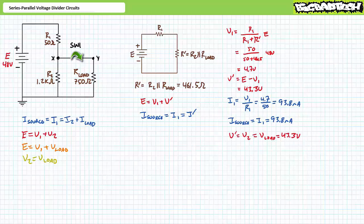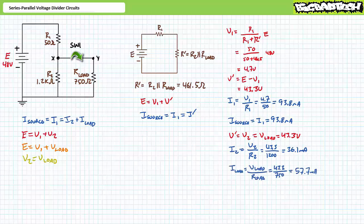Since voltage across elements in parallel is the same, V prime equals V2 which equals voltage across the load, which equals 43.3 volts. An application of Ohm's law demonstrates that I2 is 36.1 milliamps, and current through the load resistor is 57.7 milliamps. As a means of checking our work, I2 plus I load yields the expected value of 93.8 milliamps — all current that went in has indeed come out.